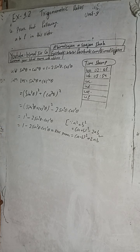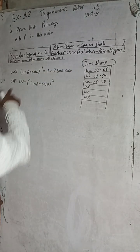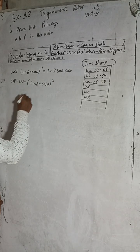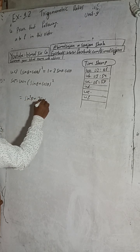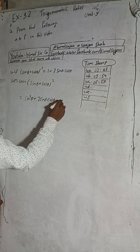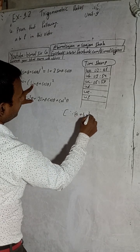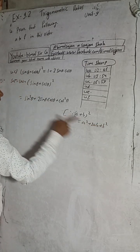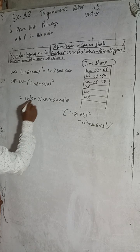I will now pause the video and write question 4c. The timestamp for 4c is 5 minutes 15 seconds. The LHS is (sinθ + cosθ)². We apply the (a + b)² formula, giving sin²θ + 2sinθcosθ + cos²θ.